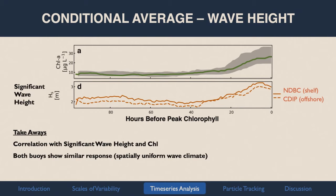Now I'm plotting significant wave height — the bulk parameter of wave size — from both buoys: the CDIP offshore buoy and the NDBC buoy on the shelf. Again, a similar pattern — it's pretty well correlated with the chlorophyll. What I want to pull out is that both buoys show a similar response, lending support to the assumption that this area has a pretty spatially uniform wave climate, meaning that buoys measuring things hundreds of miles apart are basically showing the same response.